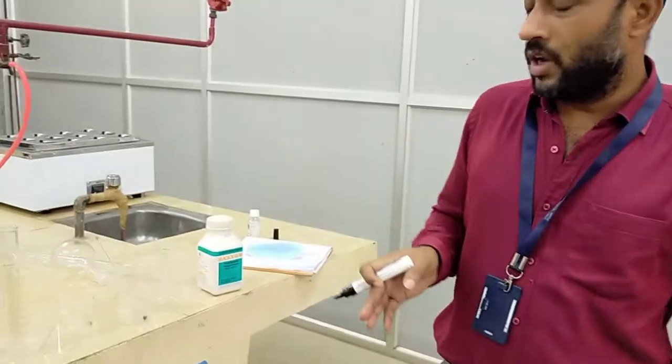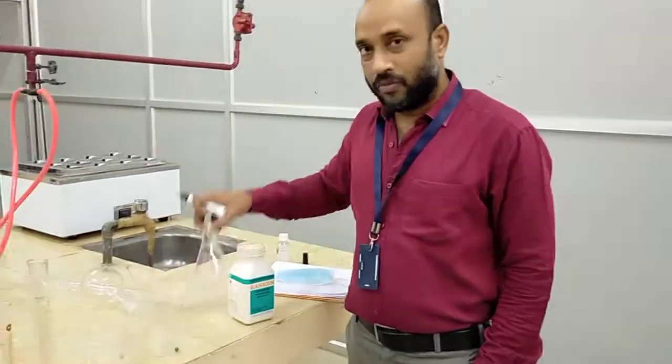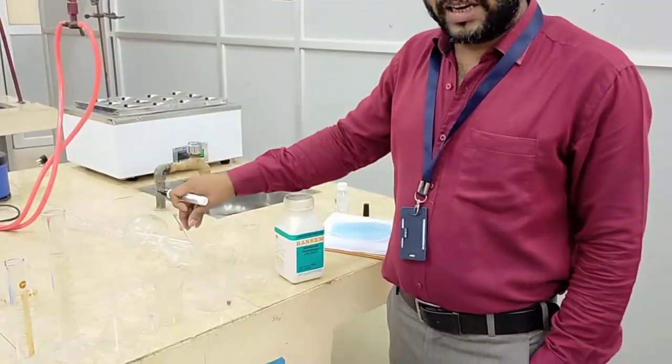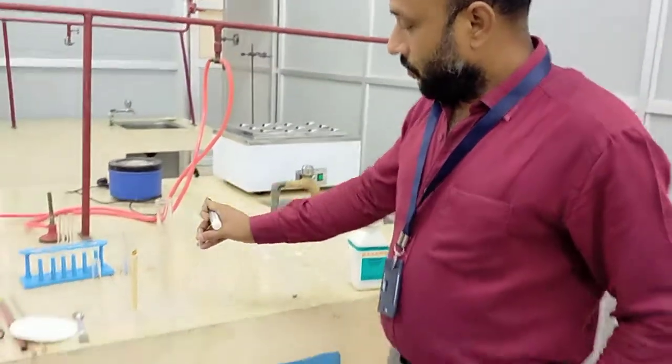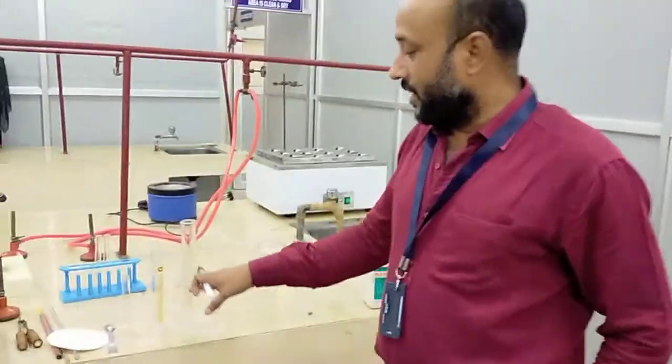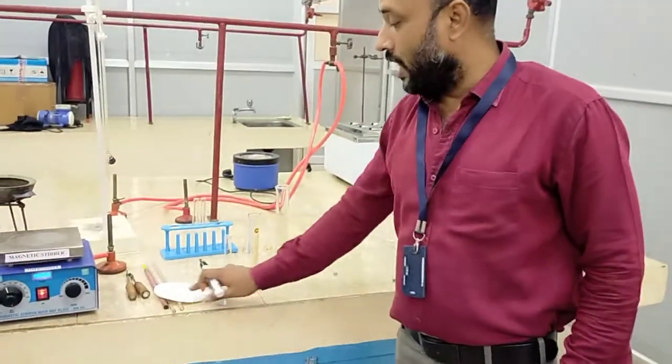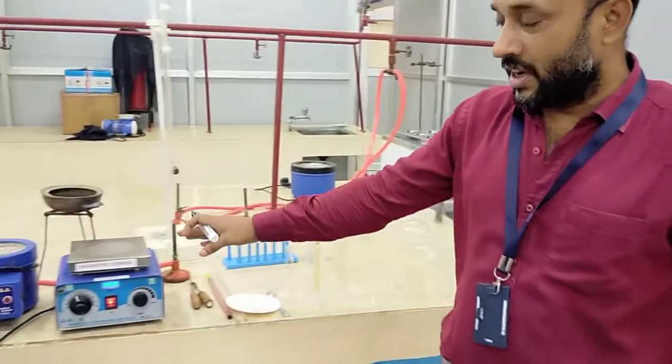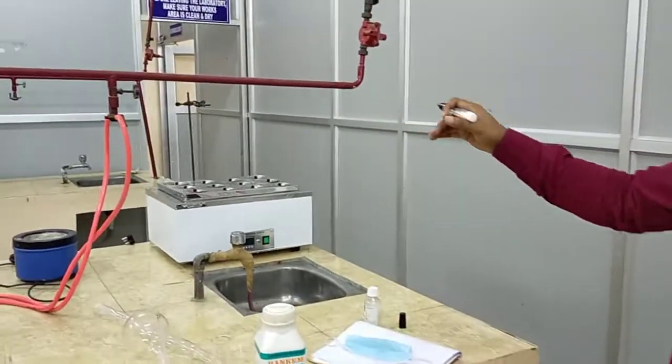We also require some apparatus like conical flask, beaker of different sizes, glassware, funnel, measuring cylinder of different volumes, spatula, filter paper, along with magnetic stirrer, as well as water bath for this process.